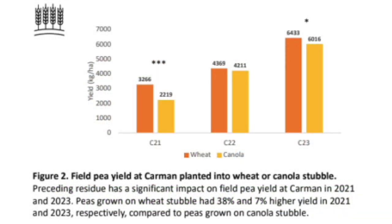So you have research now from the past three years, and preceding residue looks like it's the clear most impactful of those three factors over those three years — is that correct? Yeah, that's right. My research has been done on six site years: three years at Carmen and three years at Roblin. So far I've only analyzed the Carmen data, but based on that preliminary data, it would seem that pea yield has been most affected by preceding residue. In 2021 and 2023, peas significantly yielded better on wheat stubble rather than canola stubble, and in the other year, not significantly, but peas did out-yield on wheat residue as well.